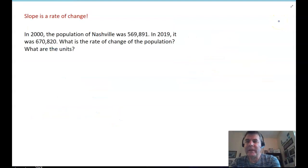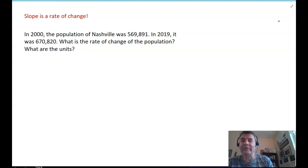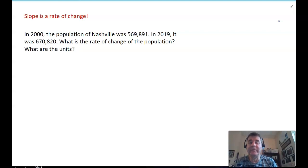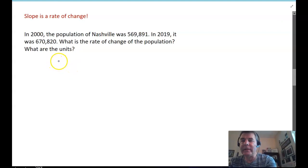Now, a really important concept to understand in calculus is that slope is just a rate of change. And everything in life changes over time. For example, in the year 2000, the population of Nashville was 569,891. And in 2019, it was 670,820. What's the rate of change of the population? So, what's happening is we're ending up with two points here. I'm going to say that 2000 is year zero. And our population at that time was 569,891.